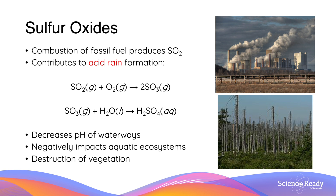Sulfur exists in nature in a wide variety of compounds. The combustion of fossil fuels will produce sulfur dioxide, which is a respiratory irritant, but the main issue is that it contributes to acid rain formation. Some of the implications include the acidification of waterways — a decrease in pH — which can lead to aquatic organism death and large-scale damage to vegetation in forests, as we can see in the image on the right, which shows a forest damaged by acid rain with all greenery gone.